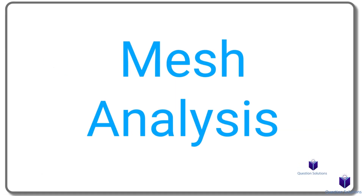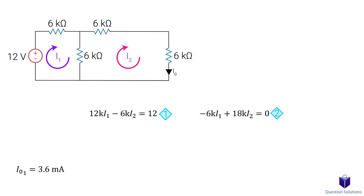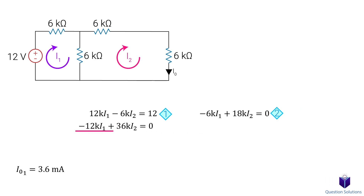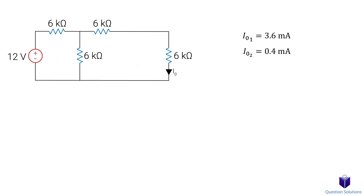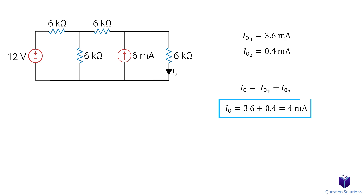I have a complete guide to mesh analysis, so if you want to refresh, please take a look at that video. Now we can use elimination to solve these equations. If we multiply the second equation by 2 and add it to the first equation, it will eliminate I1. We get 0.4mA for I2, and we don't even need to solve for I1, since I2 is the same as I0 because it's the same branch current. So the current that flows through the 6k ohm resistor with just the voltage source is 0.4mA. We will label that I0. Now that we have the current flowing through the resistor from both sources, all we need to do is add them together. We get 4mA, and thus the current flowing through the resistor with both sources in the circuit.